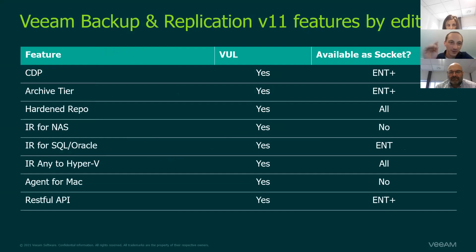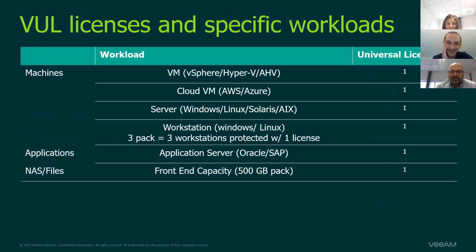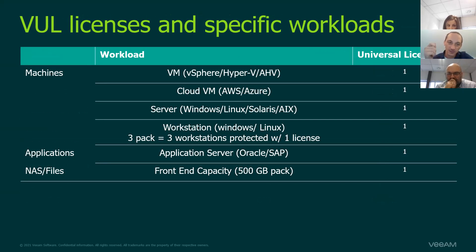I want to mention for customers still on version 9.5 update 4 or version 10: a single NAS license or VUL was licensed per slot of 250 gigabytes. So they have all the advantages if they move to version 11, because all of a sudden for the same licensing they can double the size of the backup. For differences between VUL and socket features: if you have socket licenses (perpetual) and want Continuous Data Protection, that's only an Enterprise Plus feature. So if using a CPU model, you need to be on the highest level.